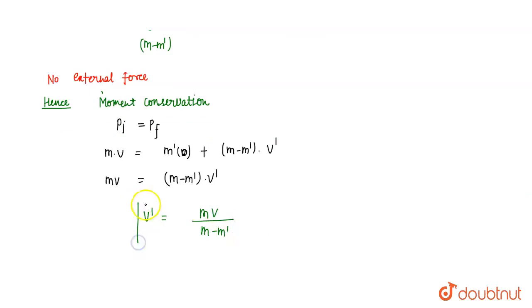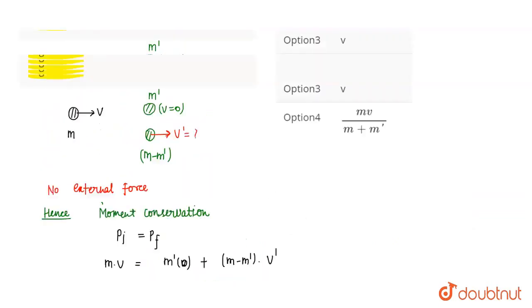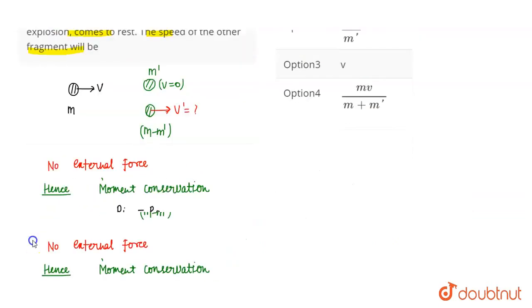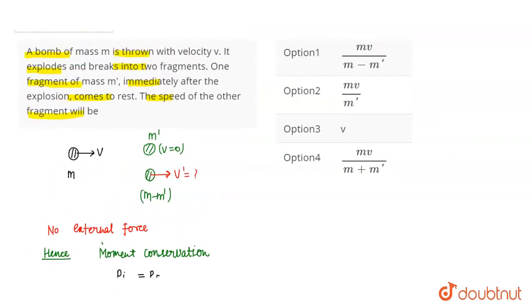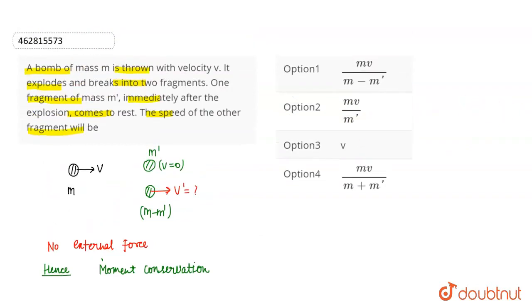याद रखिए bomb explosion के case में हमेशा moment conserve रहता है। तो यहां से अगर option देखिए तो m×v upon m-m' - option 1 इस question का right answer हो जाएगा। याद रखिए bomb जब explode होता है तो moment हमेशा conserve रहता है क्योंकि external force zero होता है।